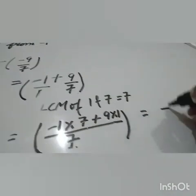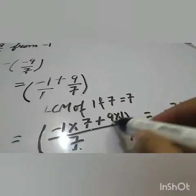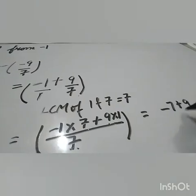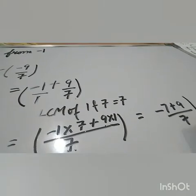Minus 1 into 7, that is minus 7 plus 9 ones are 9. Here is 7.